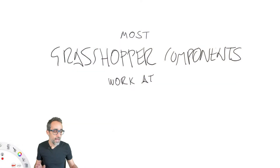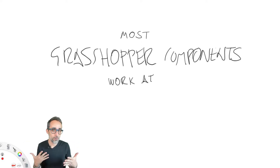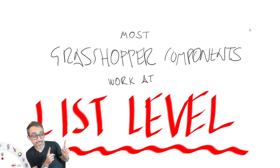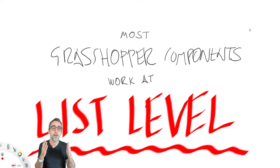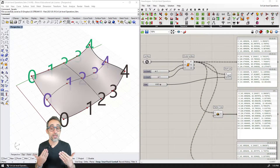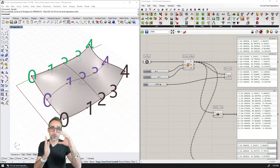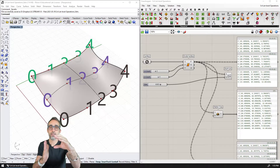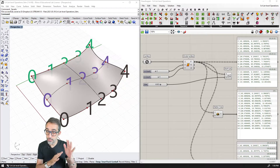As a general rule of thumb, most Grasshopper components work at the list level — I'm flashing this in red because it's super important to understand. Most Grasshopper components work at the list level. What that means is that the operations they do, they do with all the elements that are part of the same data list, the same branch. They will very likely not combine elements that are on different lists or different branches. Only a handful of components that work at the tree level do that.